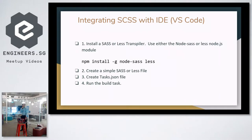So how do we integrate SCSS with an IDE? We install it using a Less transpiler, or we can use node-sass or less with Node.js, and then we install the program. After installing it, we create a simple .scss or .less file. Based on the file, we name it a certain file name, and from then on we use that file name and create a task.json file where we can add attributes and configure how we want to identify certain features. Then we run the file after it completes.